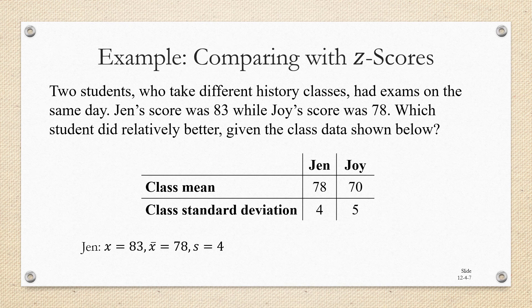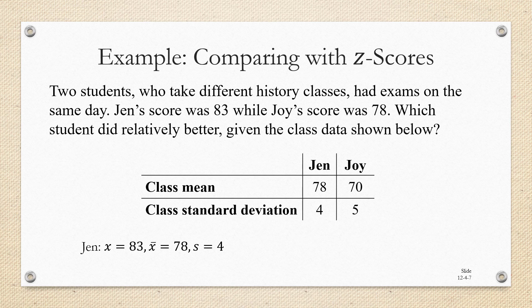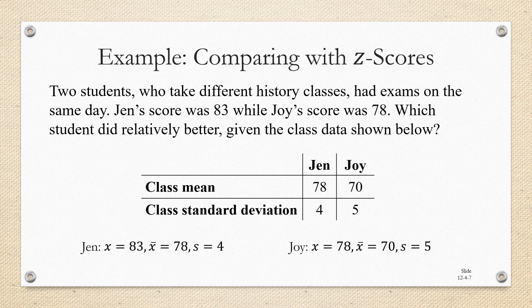So we're going to write down the three important values for Jen's class. Her data value, her score, 83, the mean of her class, 78, and the standard deviation, 4. And then we're going to write down the three important facts from Joy's class. X, 78, X bar, 70, and S equals 5.